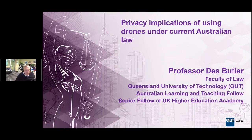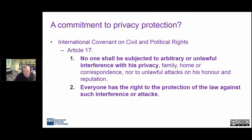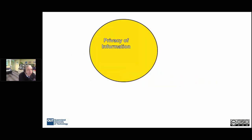I'm talking today about the privacy implications of using drones in Australia. Australia is a signatory of an international covenant on civil and political rights, which provides that as a signatory we are to provide in our domestic system adequate protection against interference with privacy — which sounds very grand, but in actual fact it hasn't worked out quite to be so comprehensive.